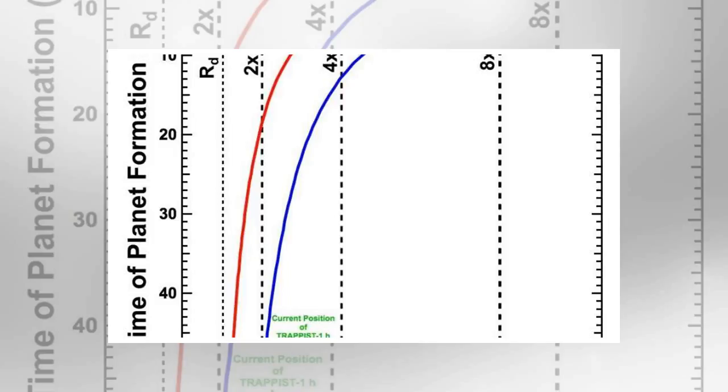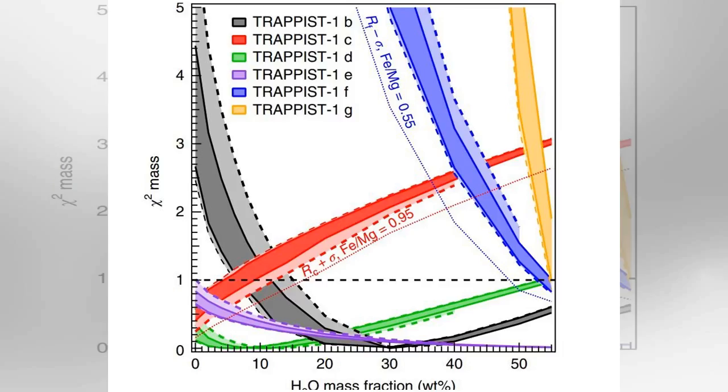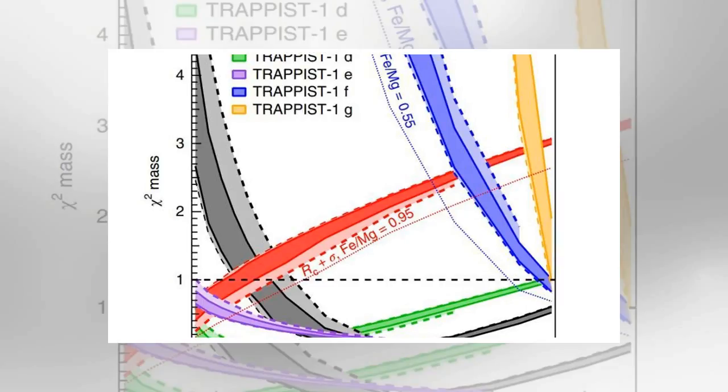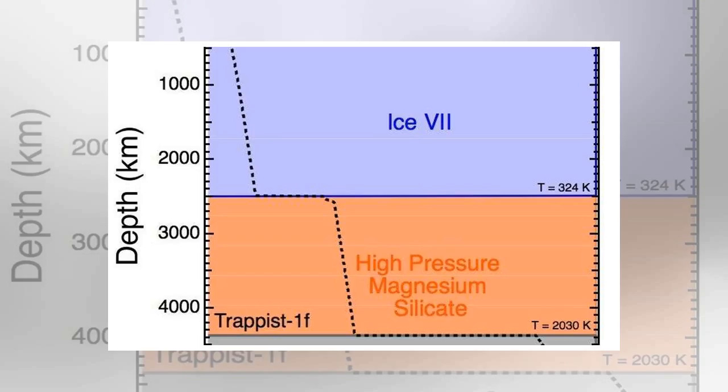This graph shows the minimum starting distances of the ice-rich Trappist-1 planets, especially f and g, from their star (horizontal axis) as a function of how quickly they formed after their host star was born (vertical axis). The blue line represents a model where water condenses to ice at 170 K, as in our solar system's planet-forming disk. The red line applies to water condensing to ice at 212 K, appropriate to the Trappist-1 disk.